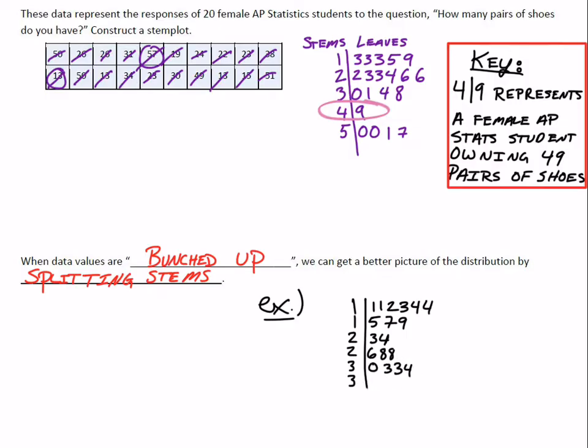Same thing for the twos: any data I get that's 4 or smaller would be in the first stem, and the bigger numbers—5, 6, 7, 8, 9—would be in the second stem. Same for the threes: smaller numbers and bigger numbers. So if you have a bunch of numbers that are bunched up, one method you can use is splitting the stems. What do we do if we have two different groups, two different distributions that we'd like to compare?